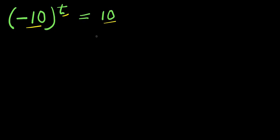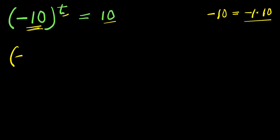Now, let's consider this first method. I have negative 10 here. I can easily write it as: if you have negative 10, this equals negative 1 times 10. So let's replace this negative 10 here with negative 1 times 10. I have negative 1 times 10 raised to the power of t, and this equals 10.